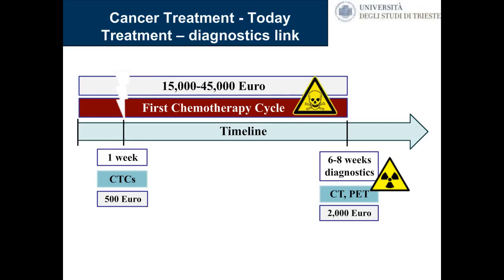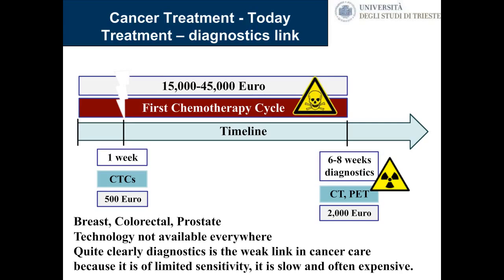Therefore, you can block metastasis before they form, not after, which is central to the survival of the patient. CTCs can be counted in breast cancer, colorectal cancer, prostate cancer — most cancers have CTCs. Brain cancers generally do not, though some do. This technique is used very seldomly because of limited sensitivity and often high expense, which makes it a weak link in cancer care.